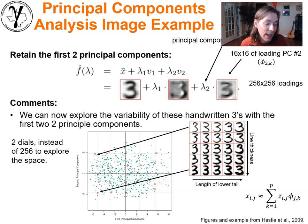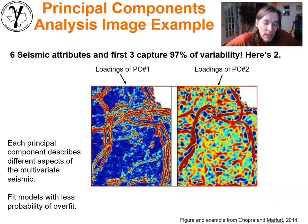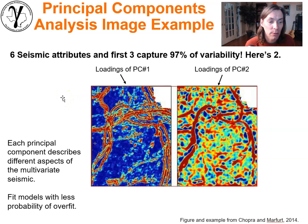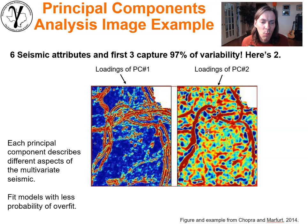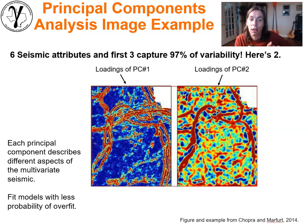Appreciation to Hastie et al. 2009 for this wonderful example. Now for a subsurface example from Chopra et al. — they applied PCA to six different seismic attributes, looking at images pixel to pixel. They found the first three principal components captured 97% of the variability. The first two principal components show different components of the seismic. By removing lower principal components, they were actually removing noise from the seismic image.